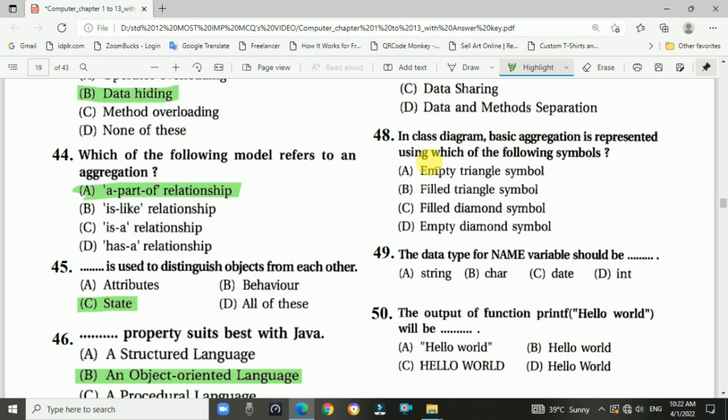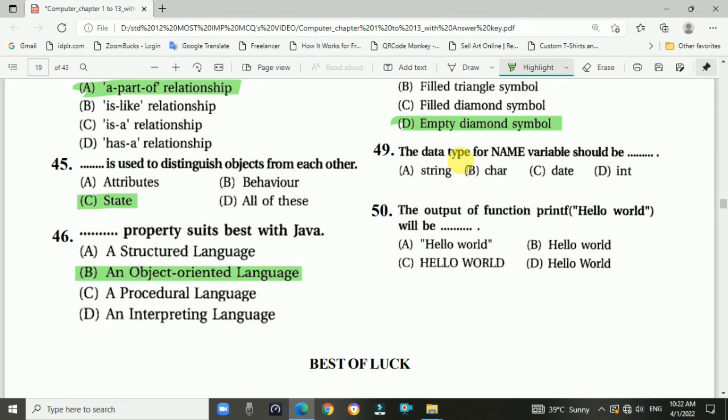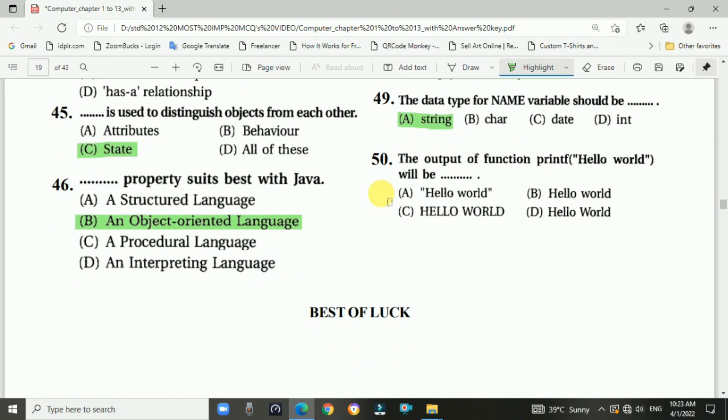Question number forty-eight: In class diagrams, basic aggregation is represented using which of the following symbols. Answer is D, empty diamond symbol. Question number forty-nine: The data type for name variable should be blank. It is string. And last question: The output of the function print hello world will be. Answer is B, hello world.